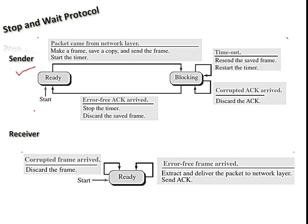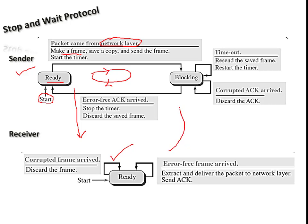In the stop-and-wait FSM, the sender is one state machine and the receiver is another. Both are in the ready state. As soon as data is received from the network layer, the sender makes a frame and sends the data to the receiver. The sender can move between the ready state and a blocking state, where it waits for acknowledgement after sending data.